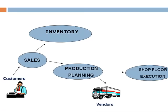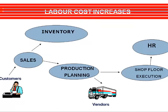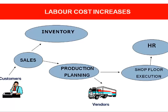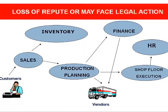Once the raw material is available, the shop floor department suddenly realizes they are short of workers. They approach HR, who in turn hire temporary employees at higher-than-market rates, increasing labor costs. The production planning department also fails to update the finance department on the materials purchased. The finance department then defaults the payment deadline set by the vendor, causing the company loss of reputation and even inviting possible legal action.